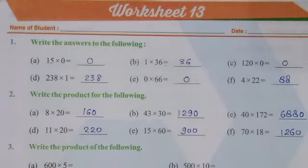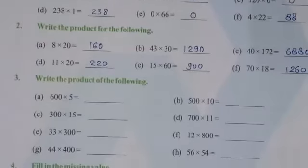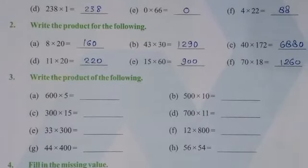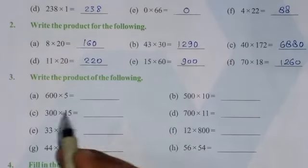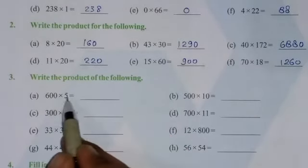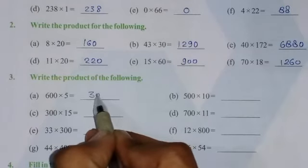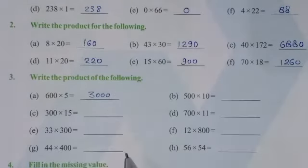See the next question number third. And the same property we have to use here. Write the product of the following. So we have to multiply these numbers, so the answer will be 3000.